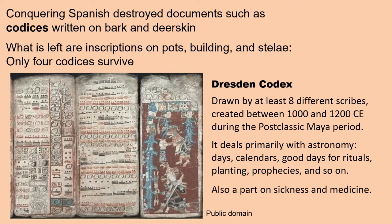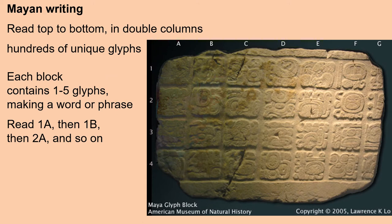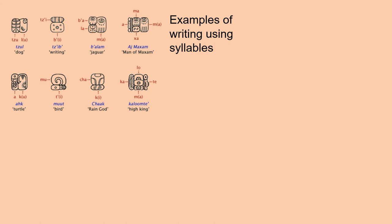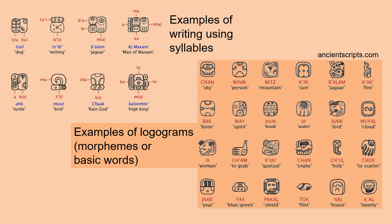Mayan writing is read from top to bottom in double columns. They used hundreds of unique glyphs. Each glyph block in a stela contains one to five glyphs making a word or phrase, read as 1a, 1b, then 2a, 2b, then 3a, 3b, and so on. Glyphs come together to make words based on syllables — for example, cha'ak, the rain god. There are also logograms representing basic words.